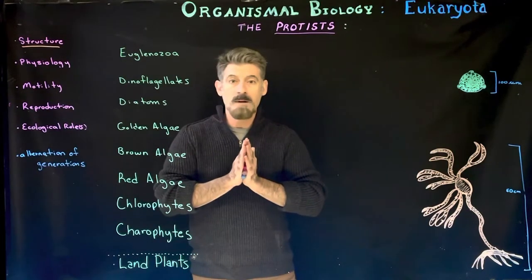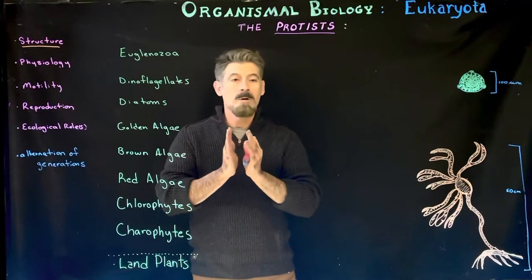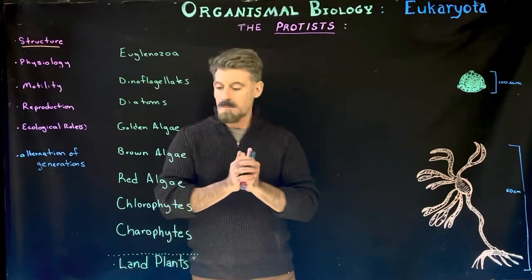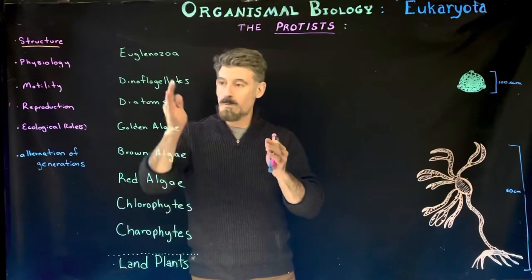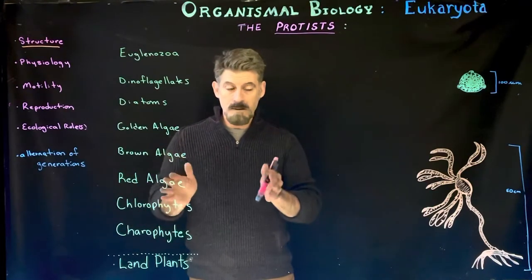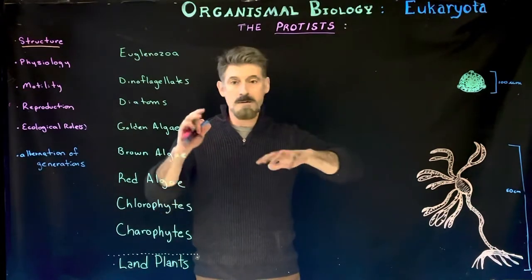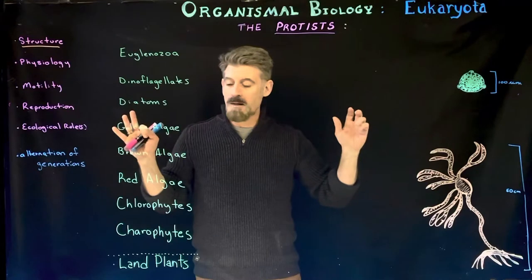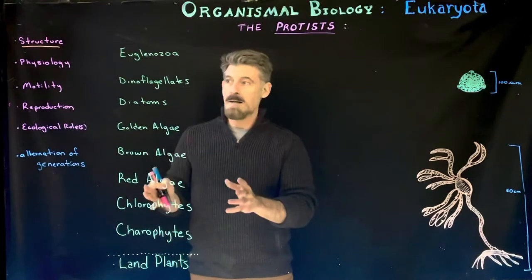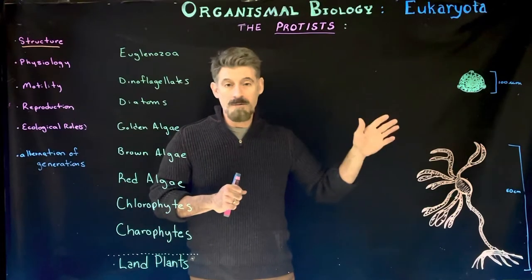We're going to continue on with protists, focusing here on the photosynthetic protists — the ones that are plant-like. That's because our destination in the near future is plants, the kingdom Plantae, and we're going through the plant groups. The protists are organizationally all over the place, so I've chosen to pick some of them that are leading us toward plants to look at now.